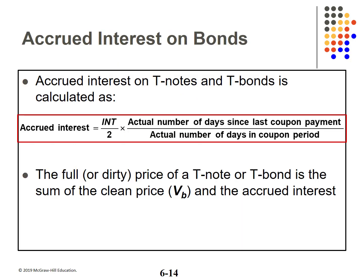Accrued interest is simply the part of the semi-annual coupon payment due to the seller. The percentage equals the number of days since the last coupon payment divided by the number of days in a coupon period. Treasuries use actual days, but munis and corporates use 30-day months and a 360-day year. The full or dirty price of a bond is the computed clean price plus the accrued interest.